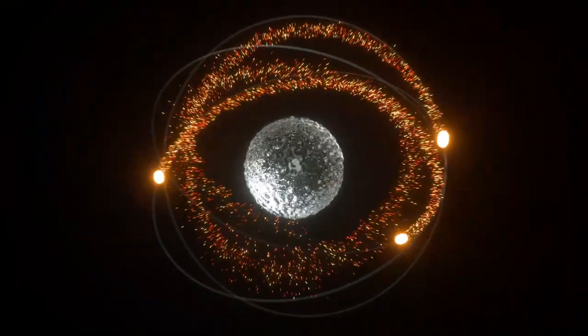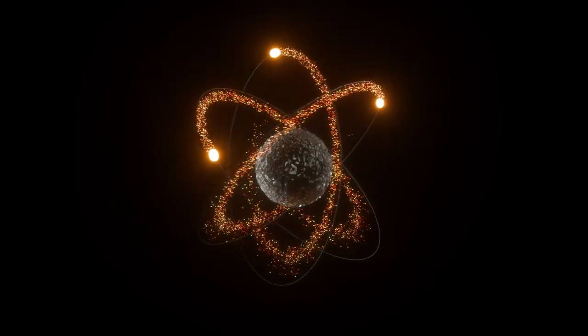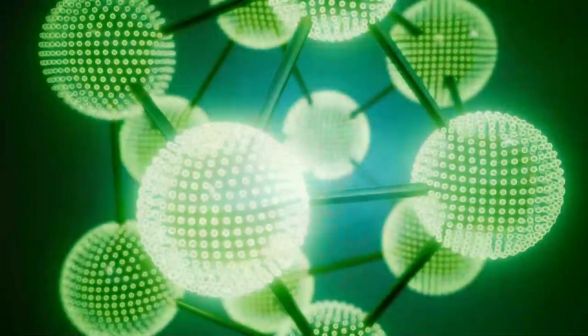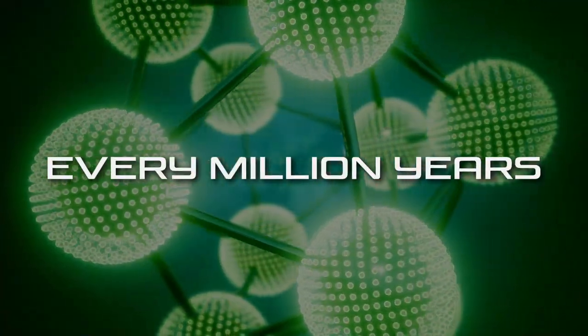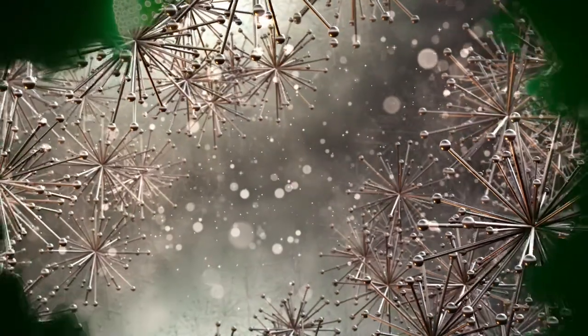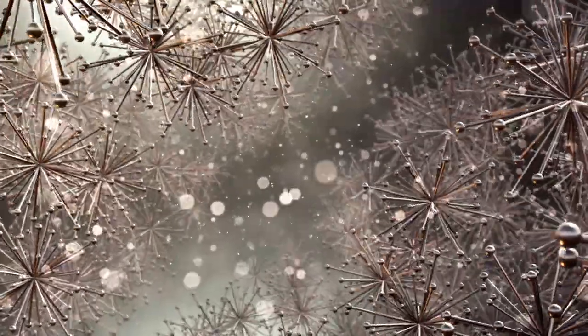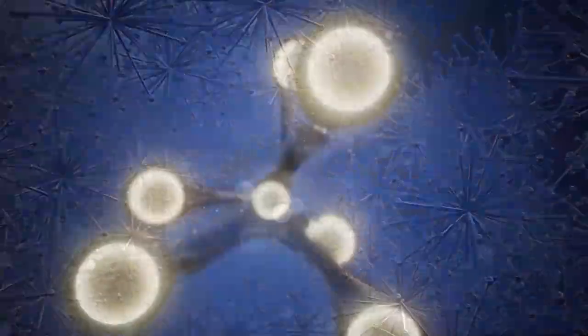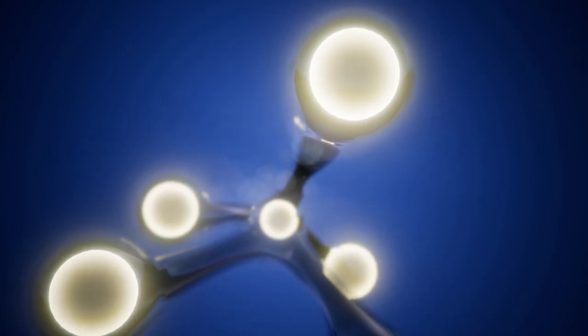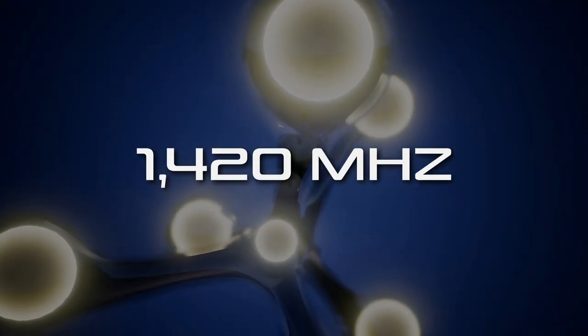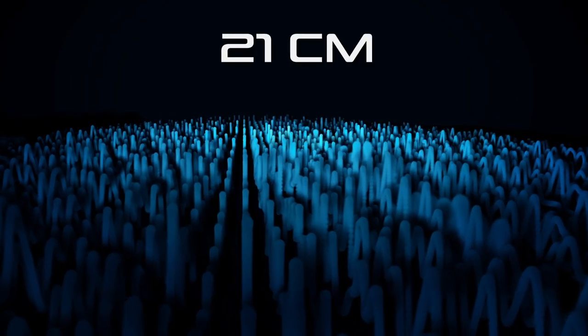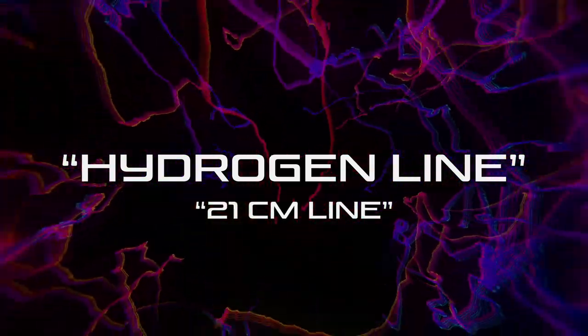When the electron and proton of a hydrogen atom are aligned, they have slightly more energy than when they're anti-aligned. A single hydrogen atom experiences a spin flip every million years or so, but there are so many hydrogen atoms that there's flipping happening pretty much all the time. Because of the change in energy during a spin flip, neutral hydrogen emits a radio frequency of 1420 megahertz, which correlates to a wavelength of 21 centimeters.